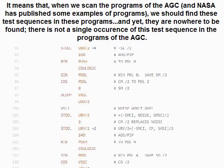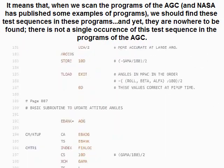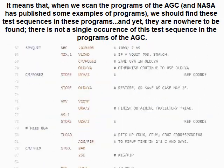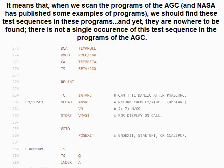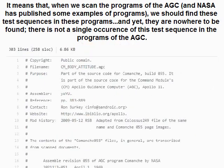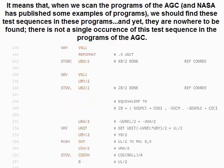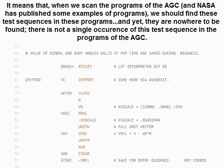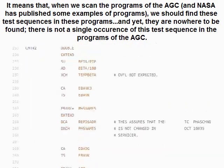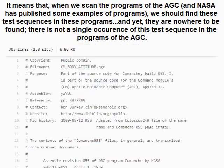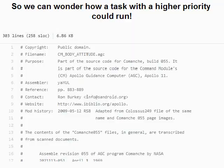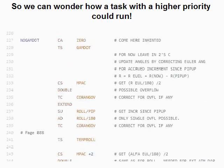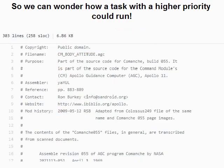When scanning the programs of the AGC — and NASA has published some examples — we should find these test sequences in the programs, yet they are nowhere to be found. There is not a single occurrence of this test sequence in the published AGC programs, so we can wonder how a task with higher priority could ever run.